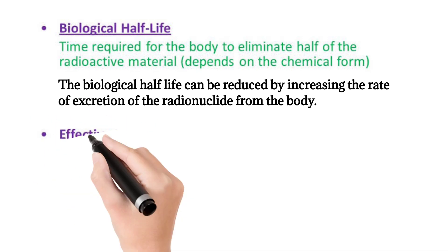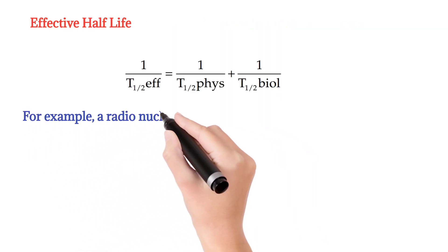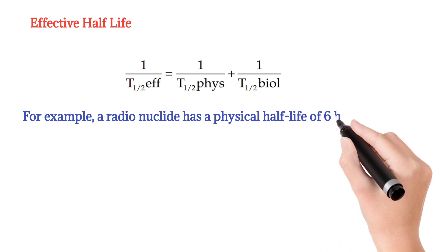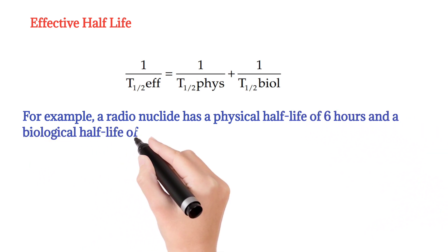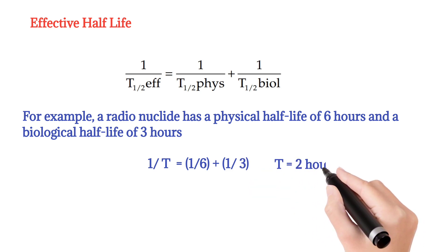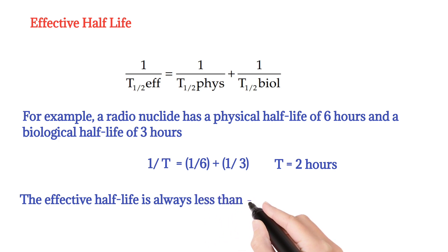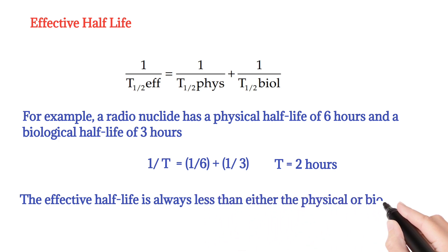Effective half-life is the net effect of a combination of physical half-life and biological half-life. For example, a radionuclide has a physical half-life of 6 hours and a biological half-life of 3 hours, then its effective half-life is equal to 2 hours. The effective half-life is always less than either the physical or biological half-life.